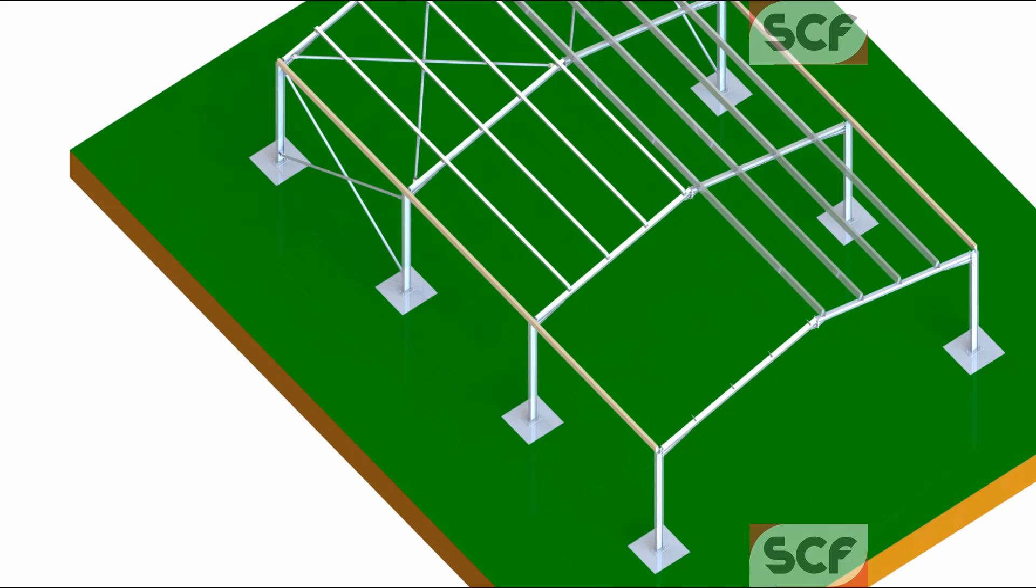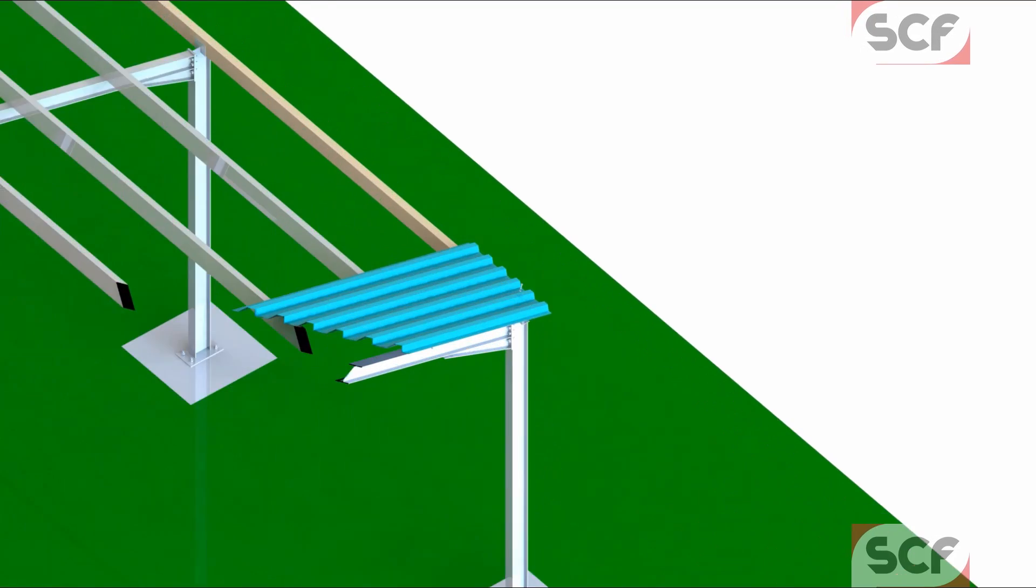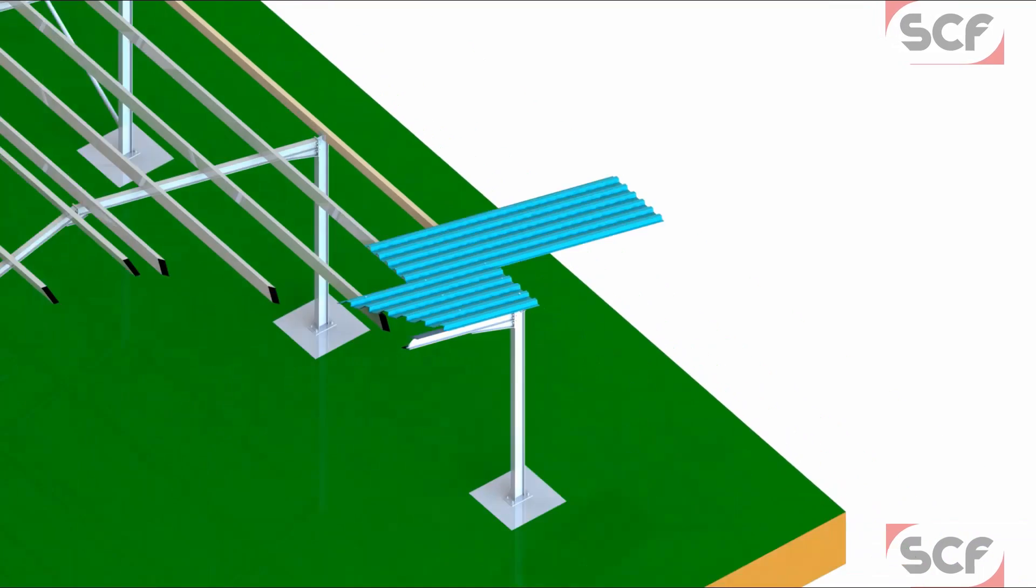The rest of the purlins should now be attached and the first roof panel lifted into position. Bolt this panel down to every purlin. Place and bolt the preceding panels down with at least one overlap.